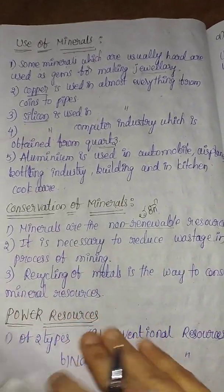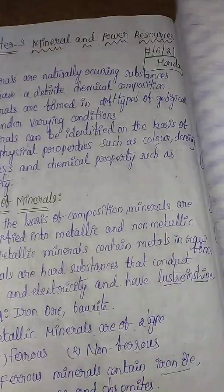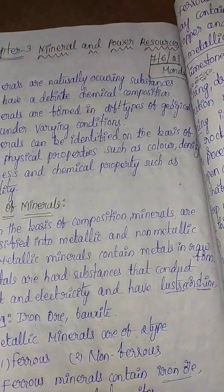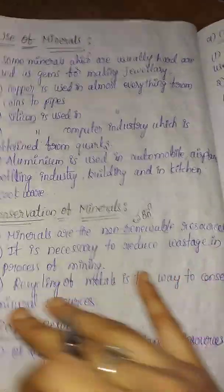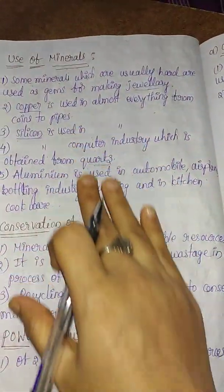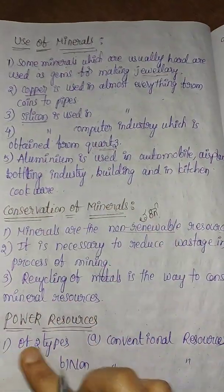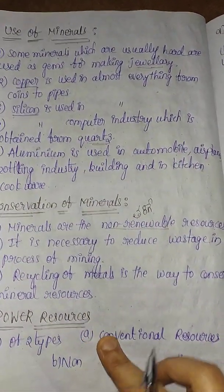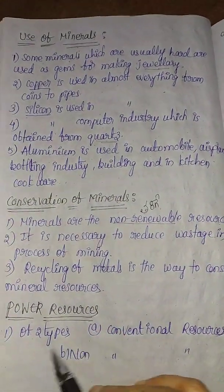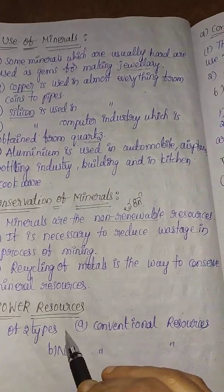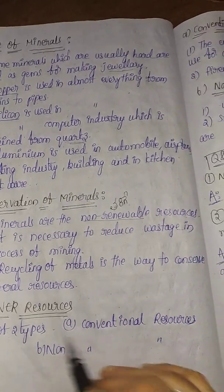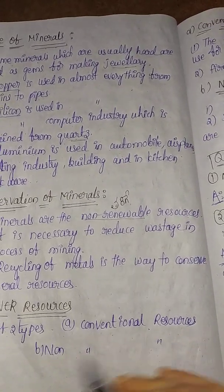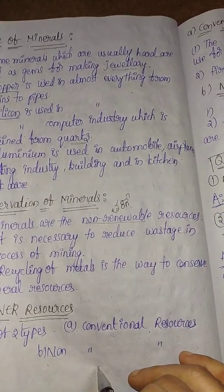Next is power resources. There are two types: conventional resources and non-conventional resources.